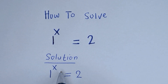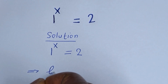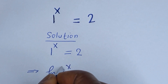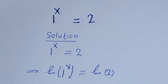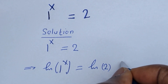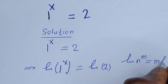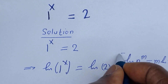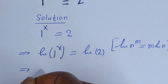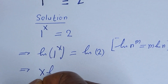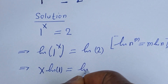Let us take the natural log on both sides of this equation. We have natural log of 1 raised to power s is equal to natural log of 2. Now take note that if you have natural log of n raised to power m, this is equal to m times natural log of n. This can be written as s times natural log of 1 is equal to natural log of 2.